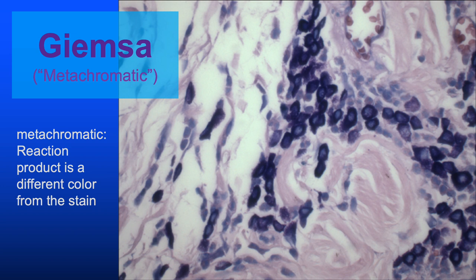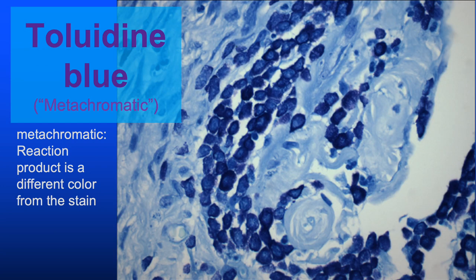It's useful to know which stains are regressive—like the EVG stain—and which are metachromatic. Giemsa is a metachromatic stain, as is toluidine blue. In these metachromatic stains, the reaction product is a different color from the stain itself: Giemsa is a blue color yet it stains mast cell granules purple. Similar situation with toluidine blue.